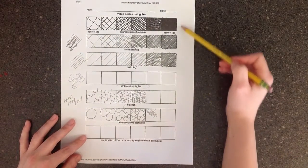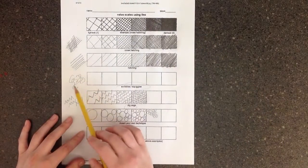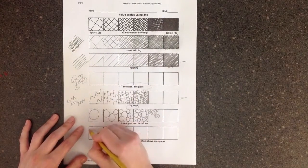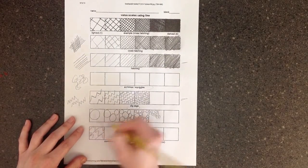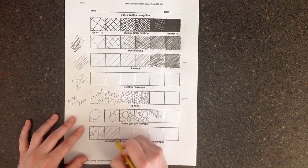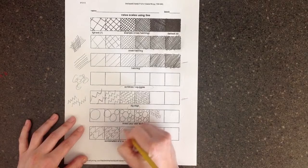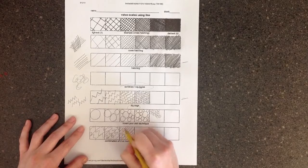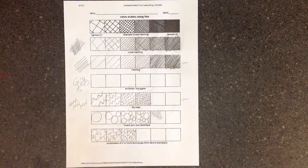And then the last one is you're going to just combine any two of these that you've already done. So you could combine the hatching with zigzags. So it would be lines that are farther apart and then the zigzags. And you would just keep doing the same thing, making your lines closer together and smaller if you need to. And that's how you create value only using line.